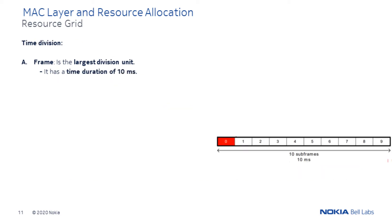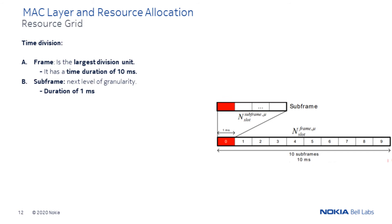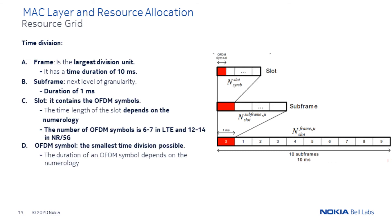On the time side, the frame is the largest division unit with a fixed length of 10 ms. Then, the sub-frame is the next level of granularity with a fixed size of 1 ms. We then have the slot, which contains individual OFDM symbols. In LTE, the number of OFDM symbols per slot is 6 or 7. In 5G, it is increased to 12 to 14. The time length of the OFDM symbol, and consequently the slot, depends on the numerology or sub-carrier spacing.